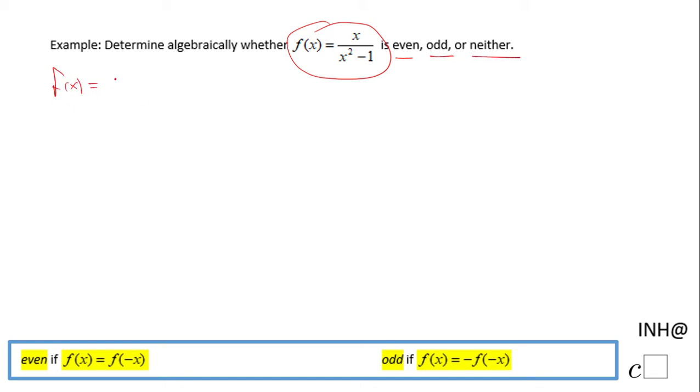I'm going to use a numerical approach first. That means I'm going to use a number like 2 and plug it in. f(2) = 2/(2² - 1) = 2/(4 - 1) = 2/3.